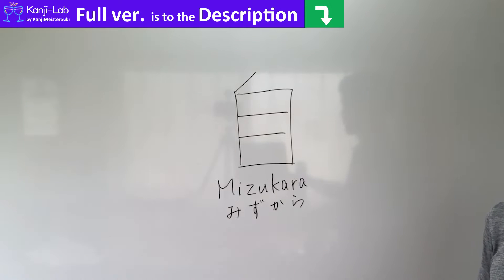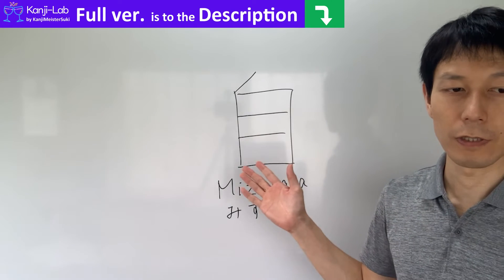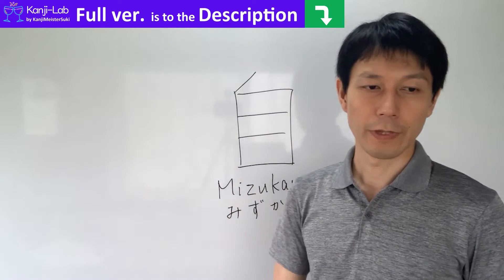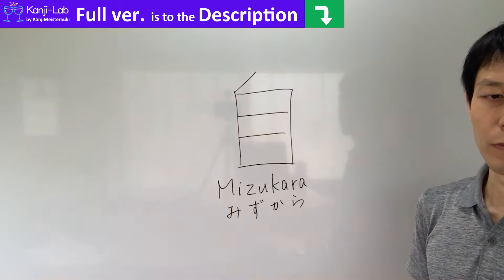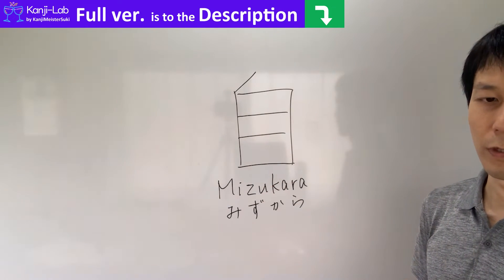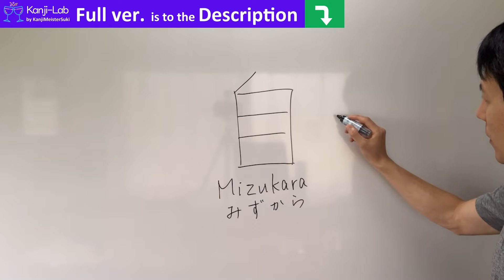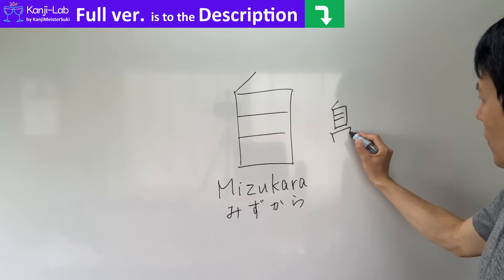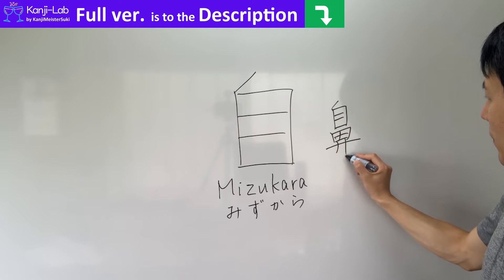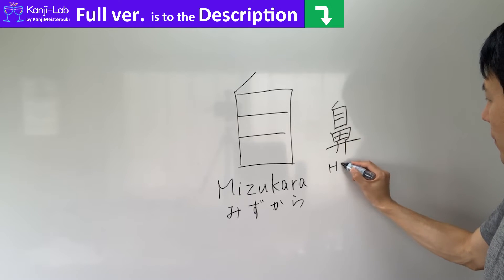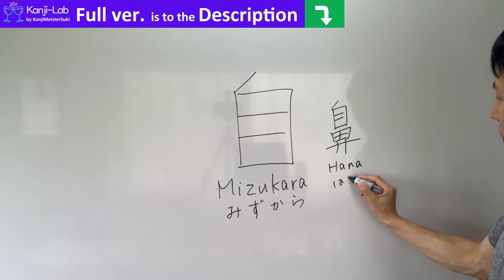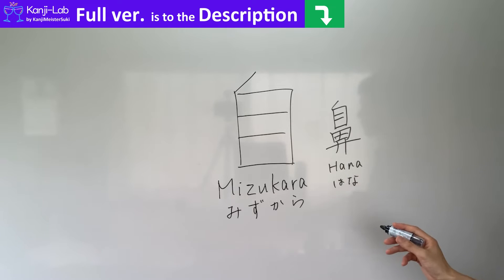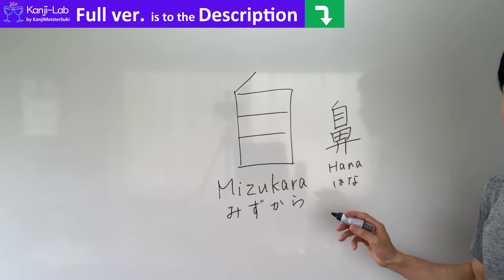Next is the meaning of the radical for MISUKARA. This radical represents the nose. And then, based on this radical, the kanji character HANA — it means nose. And the kanji character SHU.